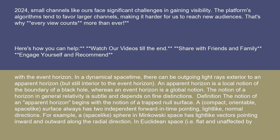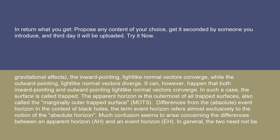The notion of an apparent horizon begins with the notion of a trapped null surface. A compact, orientable, space-like surface always has two independent forward-in-time pointing light-like normal directions. For example, a space-like sphere in Minkowski space has light-like vectors pointing inward and outward along the radial direction. In Euclidean space, i.e., flat and unaffected by gravitational effects, the inward-pointing light-like normal vectors converge, while the outward-pointing light-like normal vectors diverge.